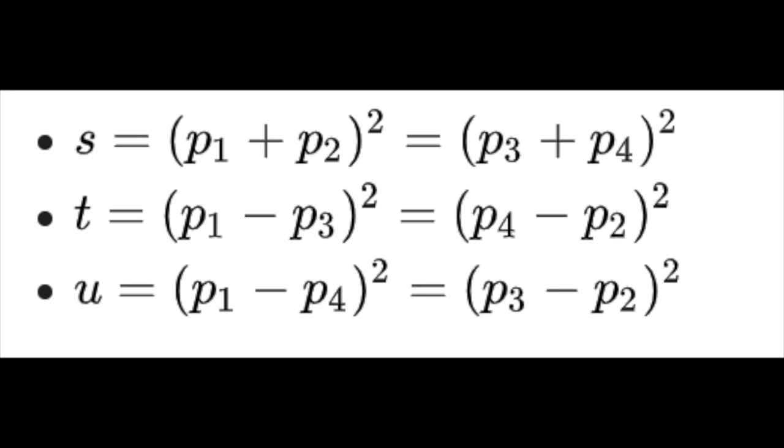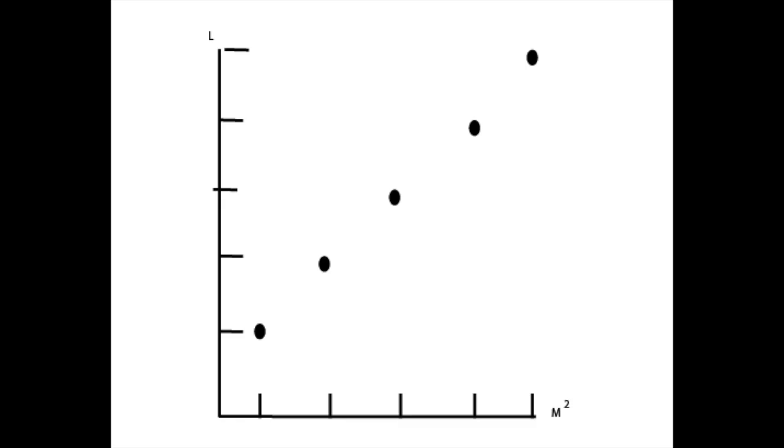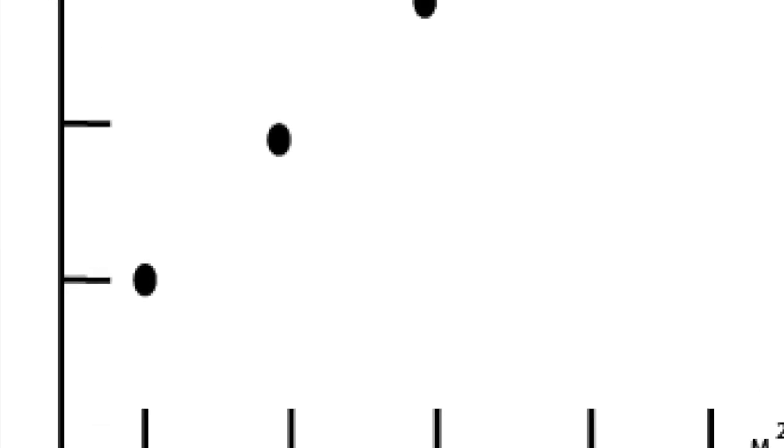Physicists were studying the strong nuclear force, looking at how these particles behaved. They wanted to make a plot of these particles in the form of what is known as a Regge trajectory — plotting mass on the x-axis and angular momentum L on the y-axis. And when they plotted these particles, they seemed to form a perfectly straight line. These weren't scattered off in random directions — they formed a perfectly straight line, which was very interesting.